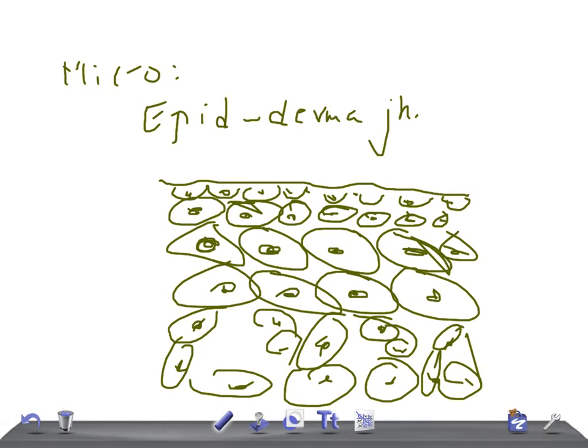The cytoplasm of these cells is amphiphilic. Remember, it's amphiphilic. The melanin pigment is present in the cytoplasm in the form of uniform fine granules.